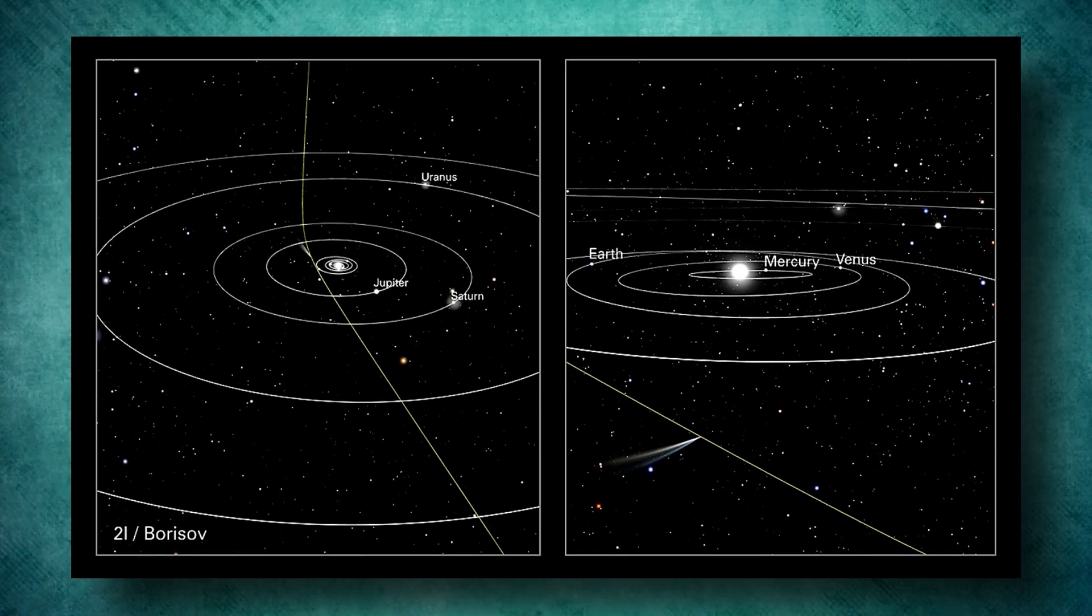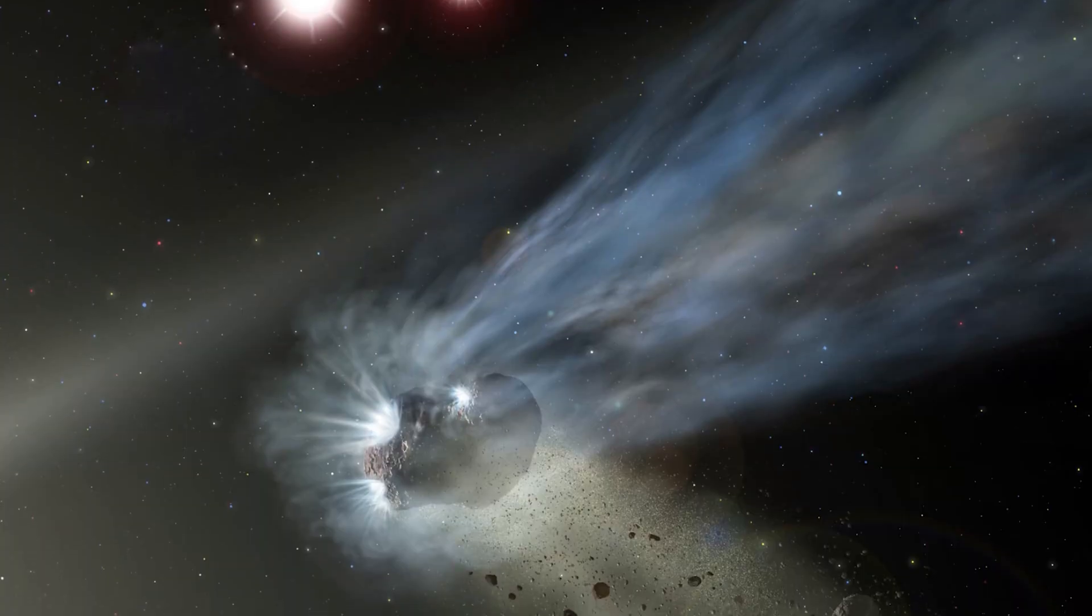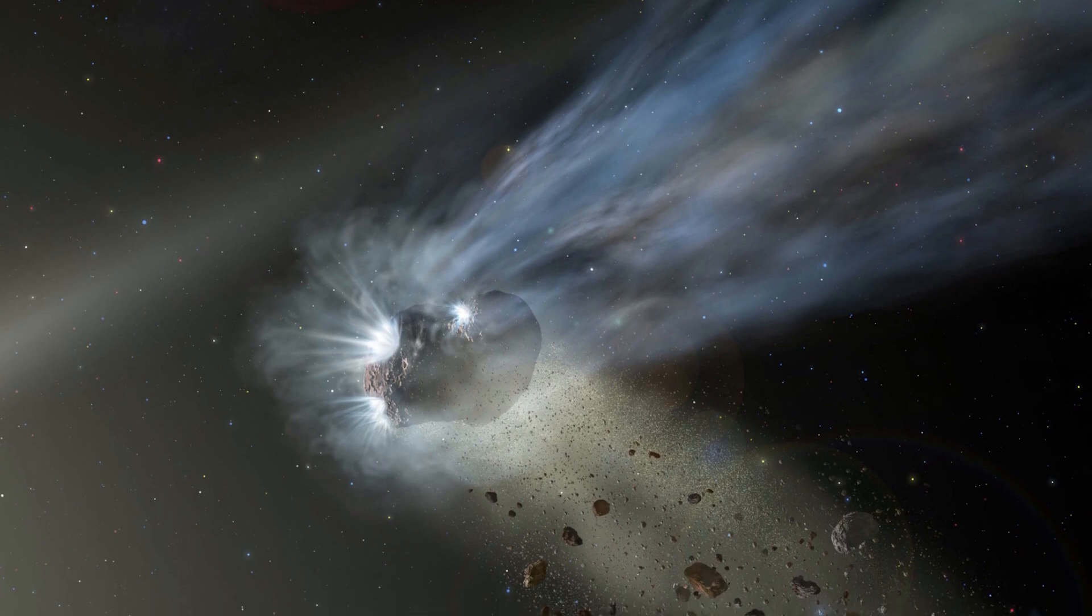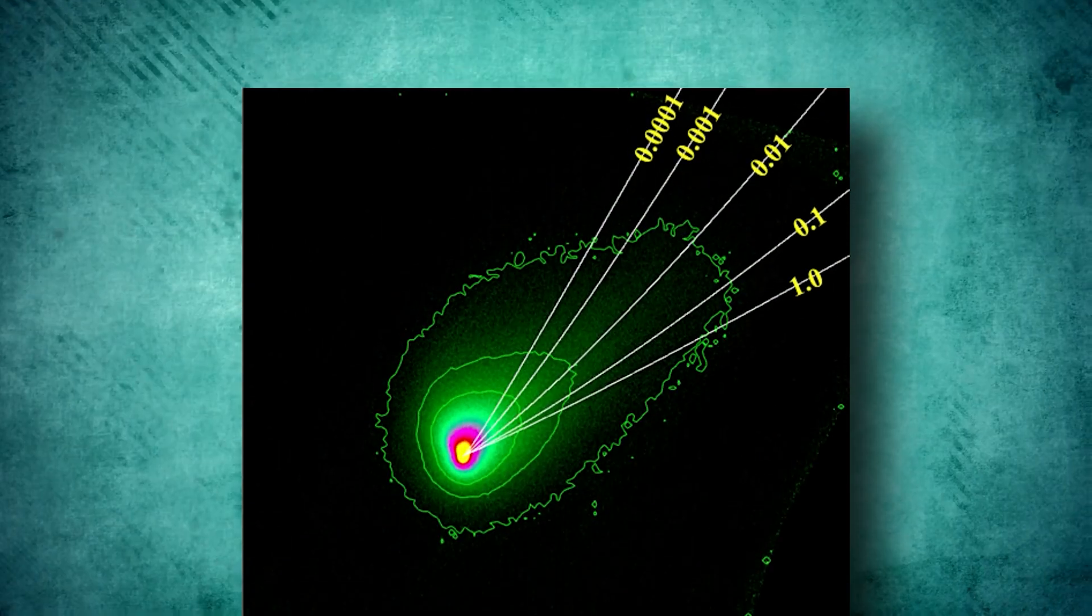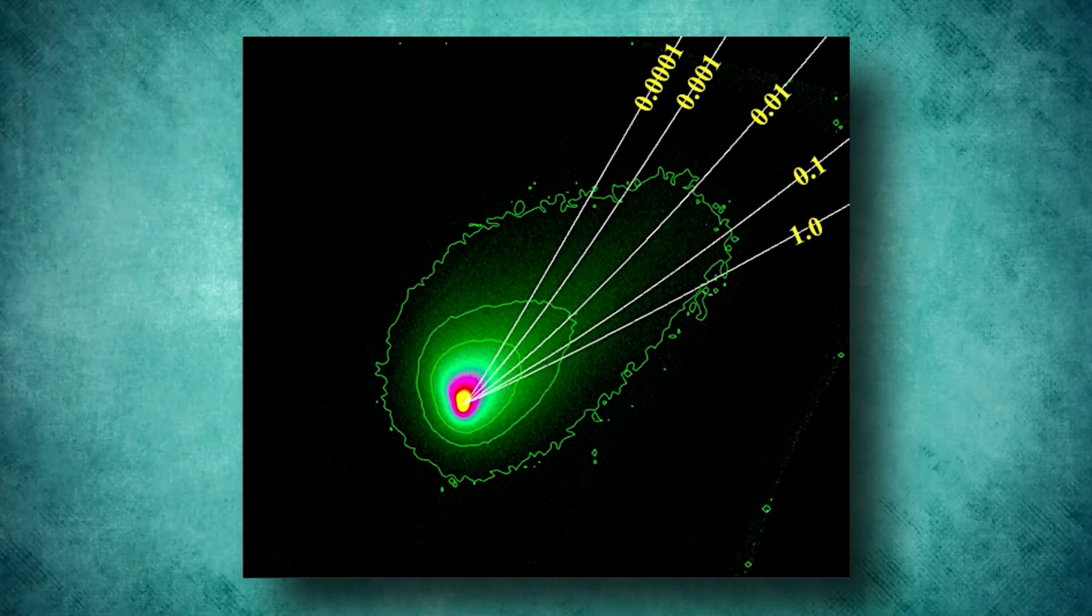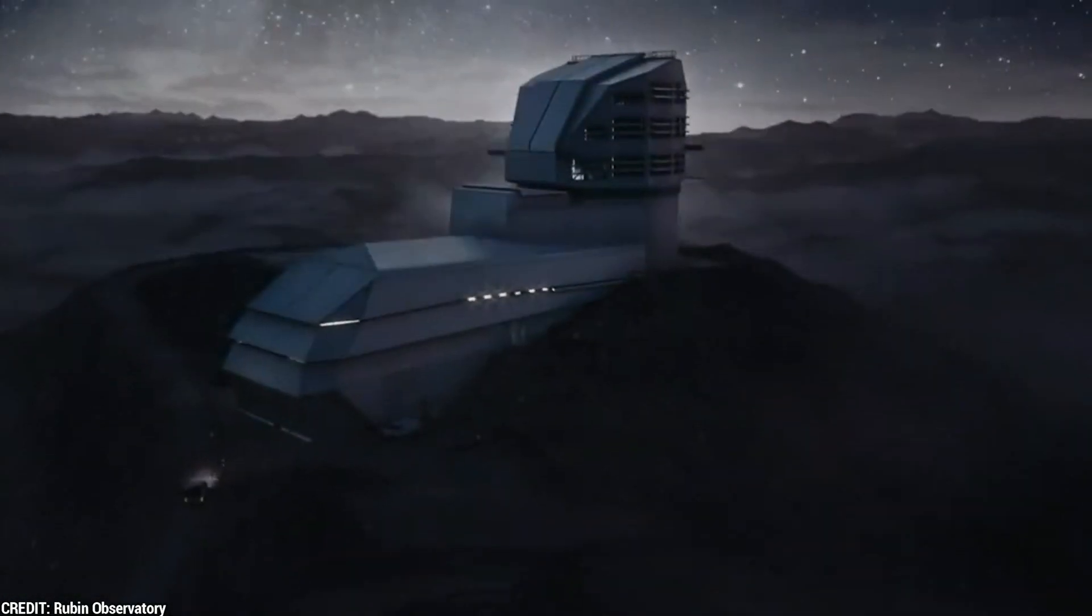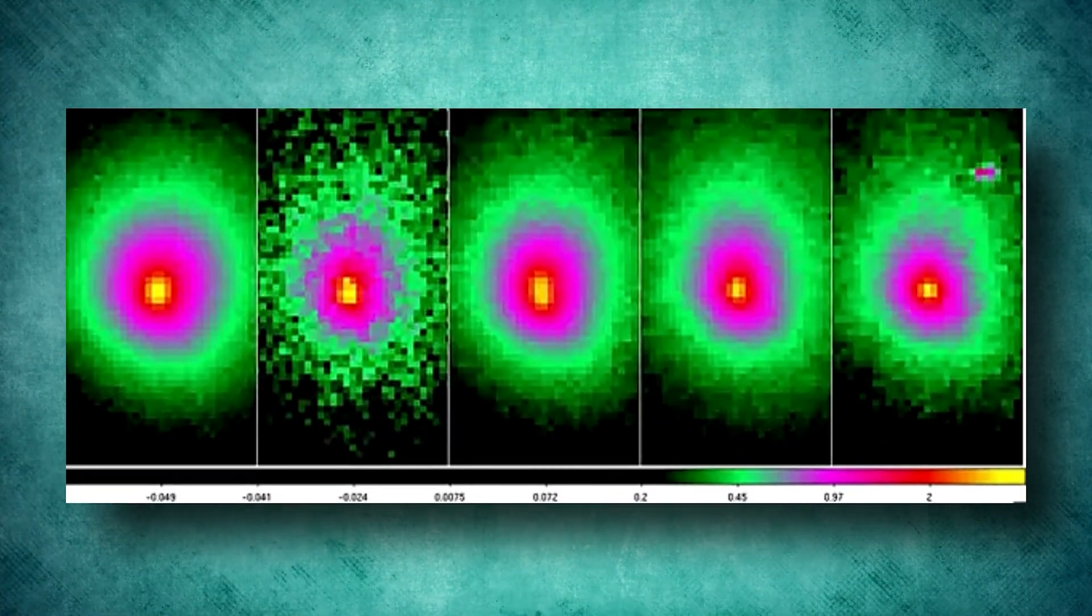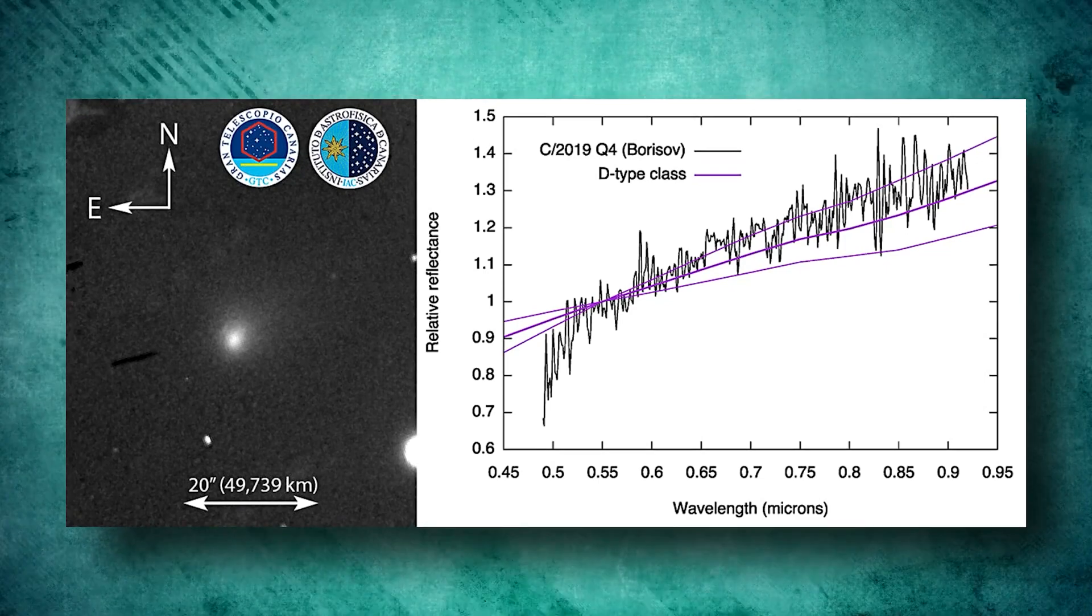Comet 2I/Borisov is heading away from the Sun and will eventually exit our solar system. It's an intriguing interstellar traveler with a hazy gas and dust envelope called a coma, and a tail formed by material pushed away by the solar wind. This comet's nucleus is about 1 kilometer wide, similar to others in our system, but was visible only through large telescopes, reaching a magnitude of 15 in late 2019. Spectroscopic analysis reveals a reddish hue from organic compounds and common cometary substances like water, carbon monoxide, and cyanide.